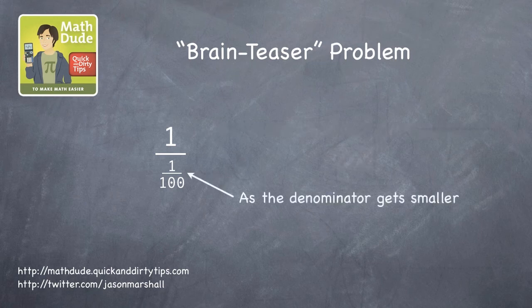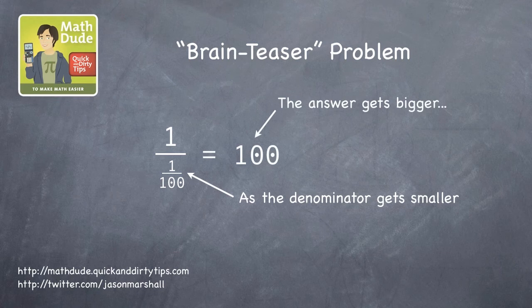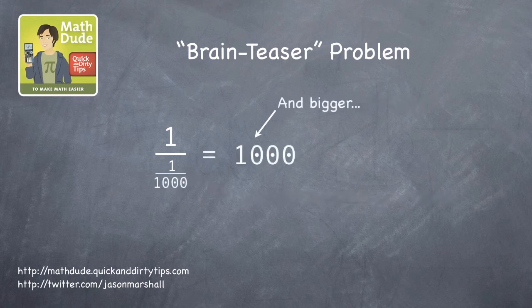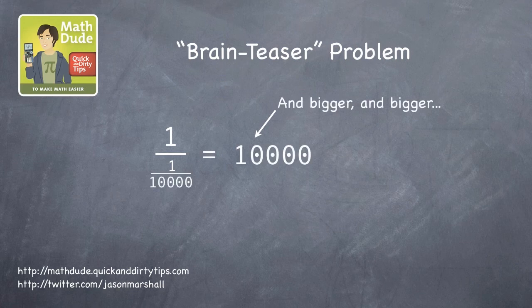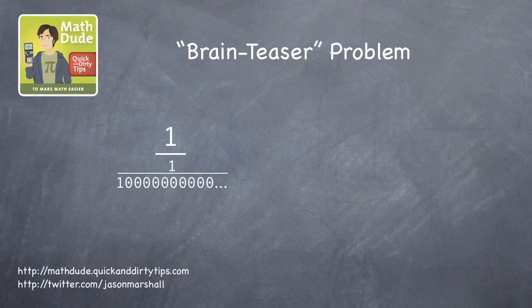The point is that as the bottom number, the denominator, gets smaller, the answer to 1 over that smaller and smaller number gets bigger. And bigger. And bigger. And believe it or not, even bigger. We could keep on doing this for days.